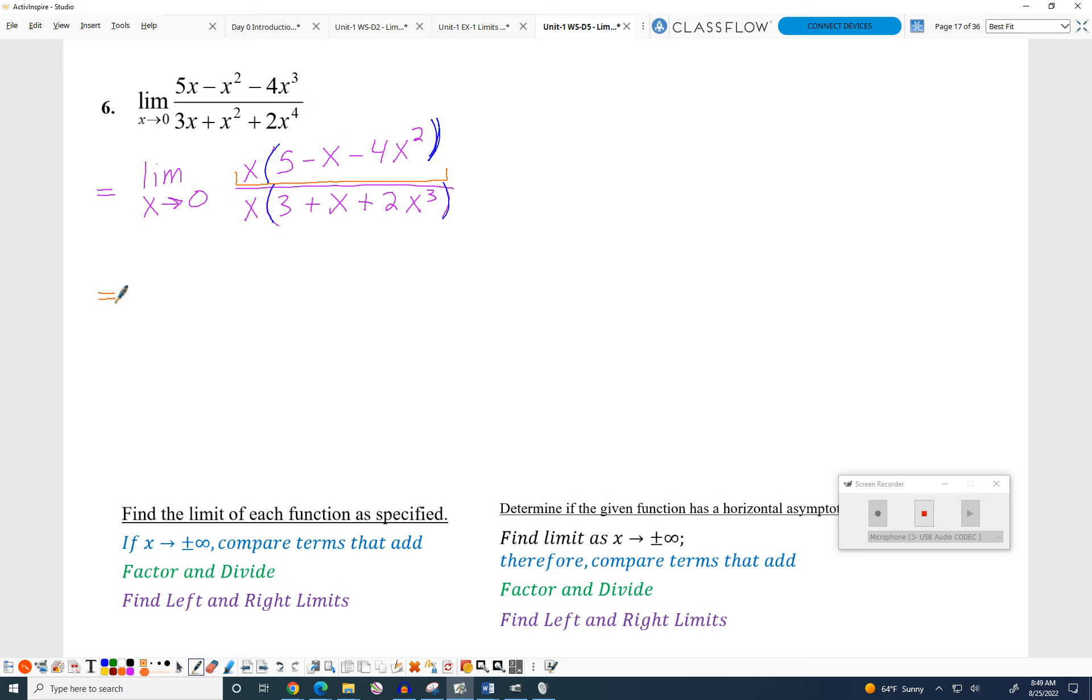That means we can split the factors into two separate fractions. So we can say this is the limit as X approaches zero. You can take the X factor on the top, the X factor on the bottom. Write them separately.